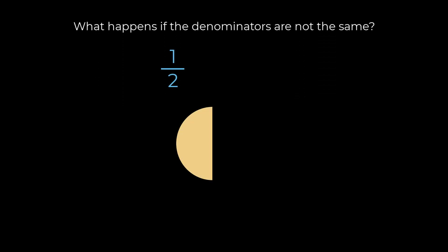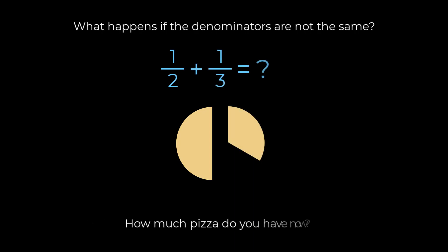What happens though if the denominators are not the same? Suppose you had one half of a pizza and I gave you an additional one third of a pizza. How much pizza would you have?